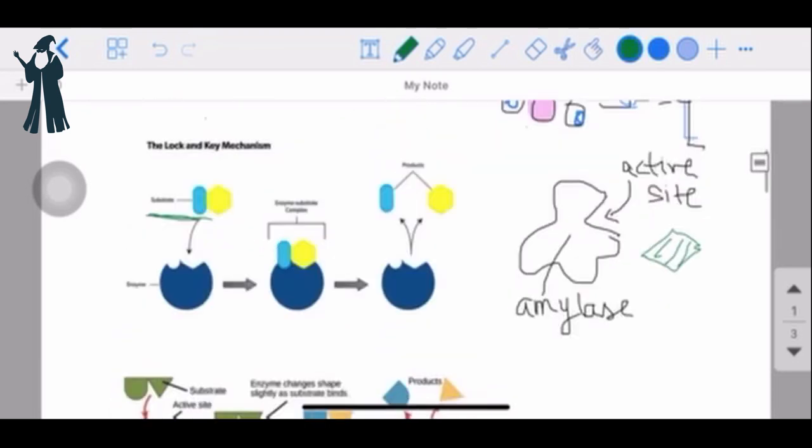So if this molecule by any chance, if this molecule did look like that, but instead it looked like a square, then this cannot bind to the active site because they're not compatible with each other.